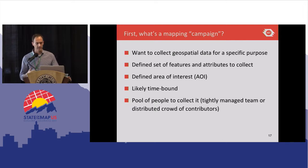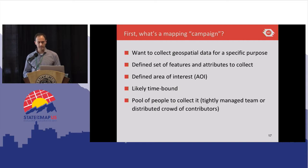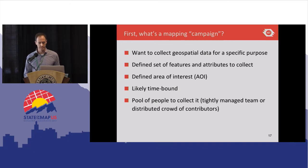When we talk about a mapping campaign, it generally has specific characteristics. Number one, we want to collect geospatial data for a specific purpose. There's a defined set of features and attributes that we want to collect, a defined area of interest, and it's likely time-bound — say, a month, three months, or six months. And it requires a pool of people on the ground to actually collect the data, which can be a tightly managed team of trained staff, volunteers, or a mix of the two.